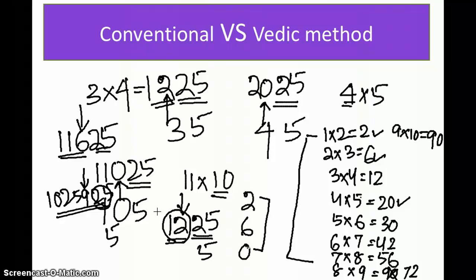So by this technique you can both find the square root and determine whether a number is a perfect square or not — two things from one method. When you look at mathematics, always look at what more you can get out of a technique. We discussed one technique and found two or three more applications. Don't just go the conventional way; dig into the numbers, find patterns, and you will see many more applications of this kind of thinking in the sessions ahead. Thank you.